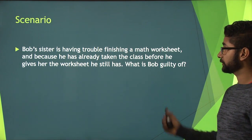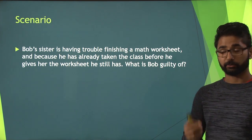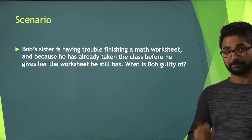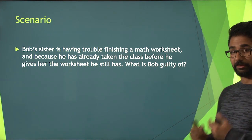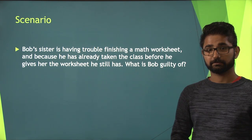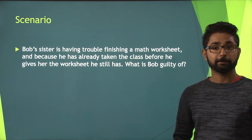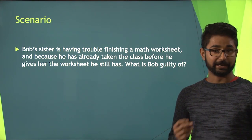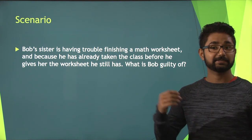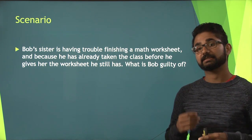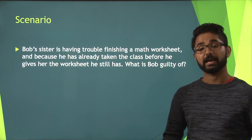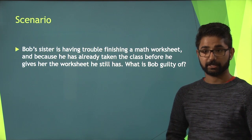What if Bob's sister is having trouble finishing a math worksheet, and because he's already taken the class before, he gives her the answers to the worksheet? What is Bob guilty of? Well, in this case Bob is guilty of aiding and abetting, because he merely gives the answers to his sister instead of having her do the questions herself and understand the material.